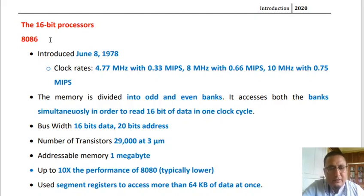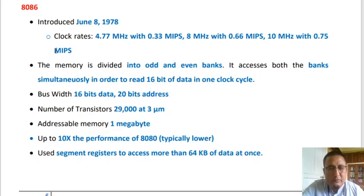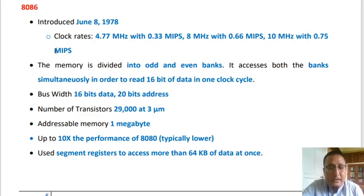The bus width of the 8086 was 16-bit for data and 20-bit for address, with multiplexed address-data lines to limit pins. It had 29,000 transistors at 3 micrometers, addressable memory of 1 megabyte, and performance 10 times that of the 8080. It used segment registers to access more than 64 kilobytes of data at once.